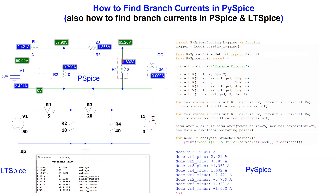The Python codes discussed in this video for the three different methods to find branch currents are posted in the video description below. If you have any suggestions for future video topics, please post them in the comments section.